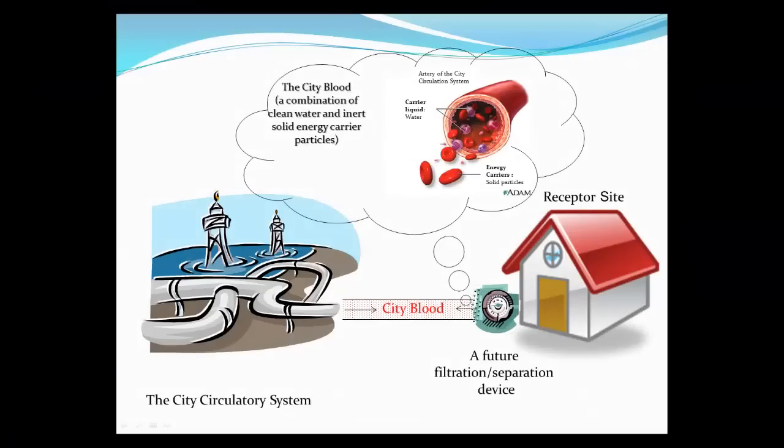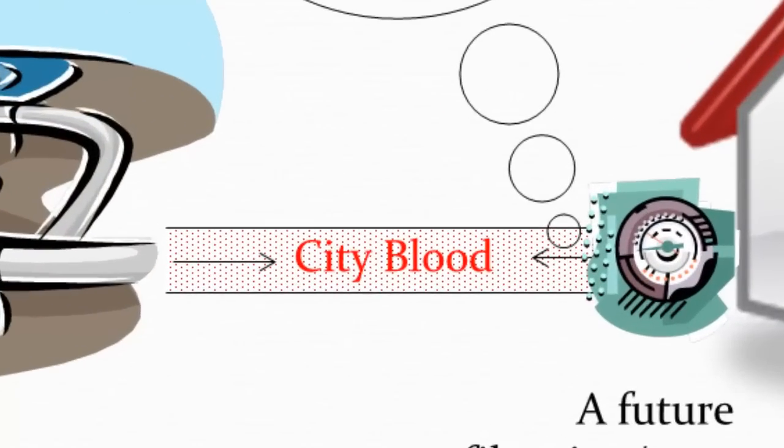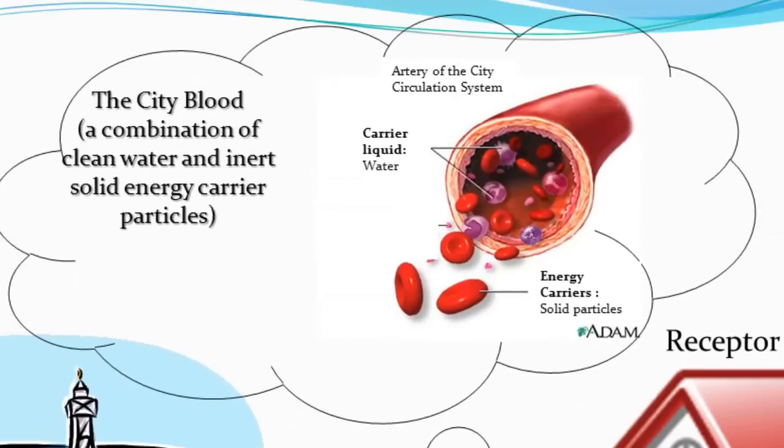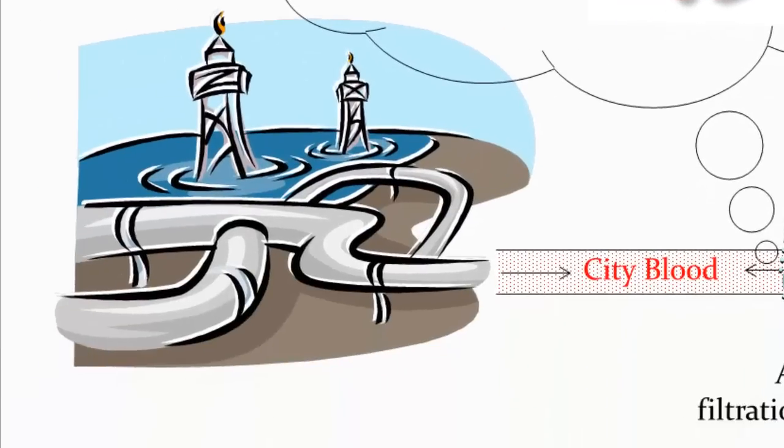In our suggested system, the carrier liquid—the 'city blood' of our analogy—will be predominantly water, so it can be pumped using the same systems that are in use today.